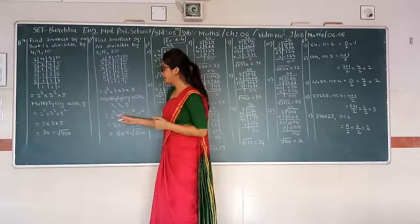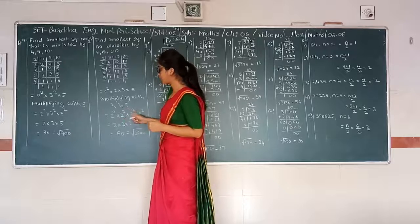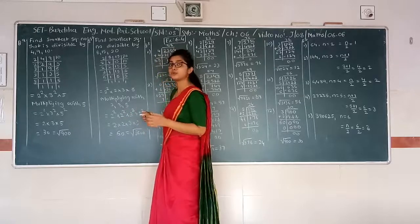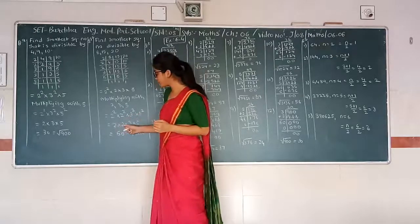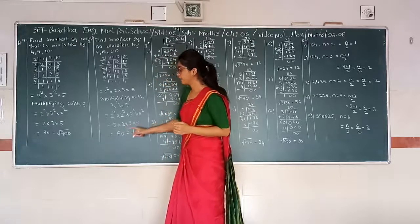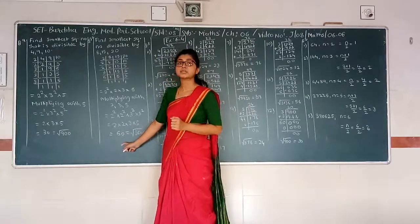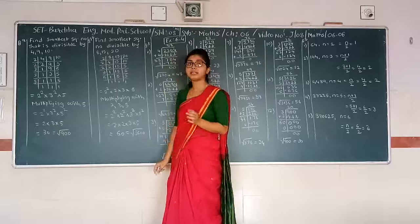Then we will get 2 squared times 2 squared times 3 squared times 5 squared. So 2 times 2 times 3 times 5 gives 60. The square of 60 is 3600.